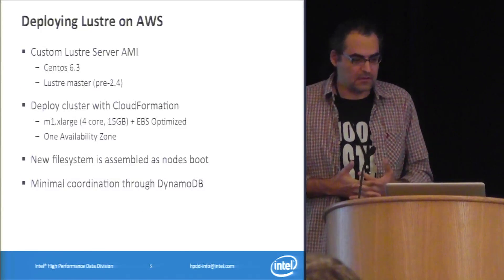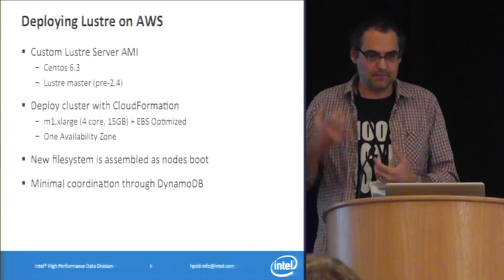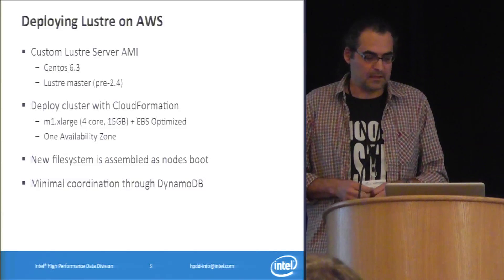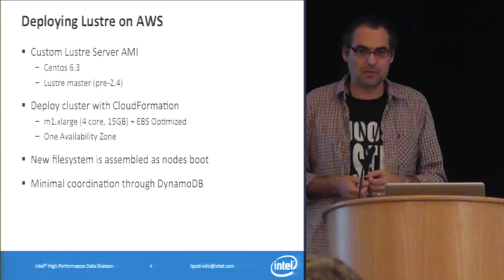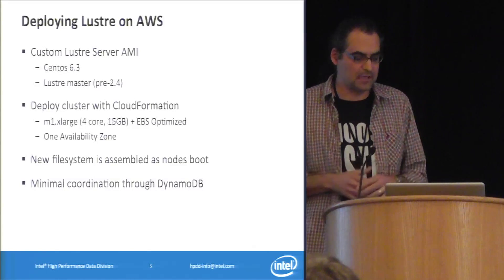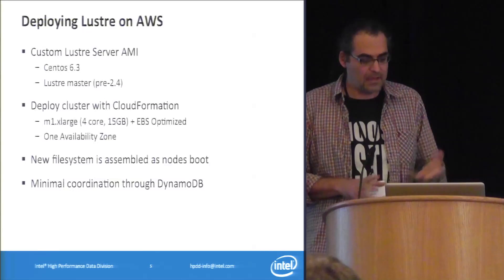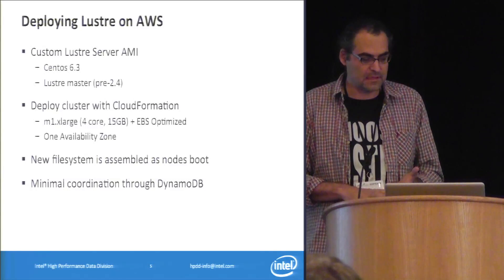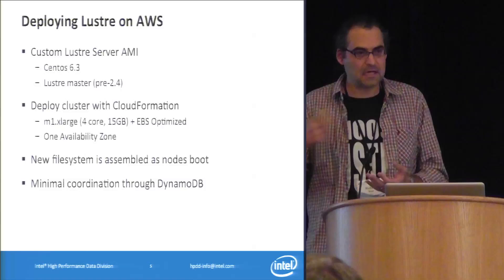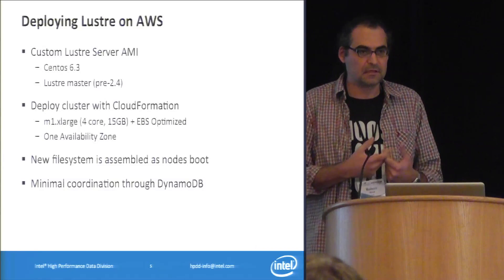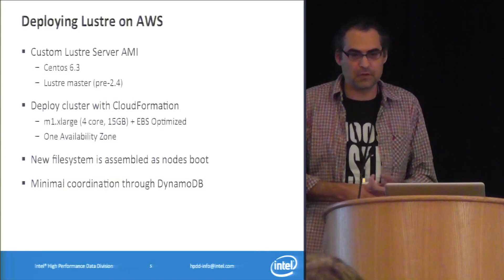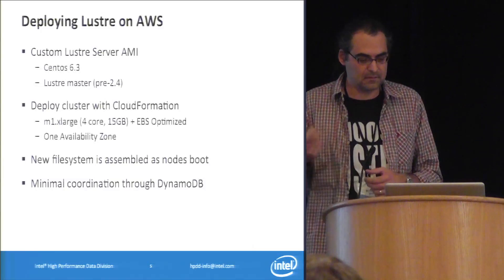Deploying Lustre on Amazon: one of the neat things about AWS is that it's very programmable — APIs for everything, manage everything through code. For this environment, a custom AMI (Amazon Machine Image) was created with Lustre pre-installed, because Lustre servers need a custom kernel. It's annoying to take a standard Linux instance and install Lustre at boot, since you'd have to reboot again to get the new kernel running. So a custom AMI was created with the kernel already included.